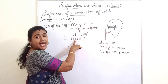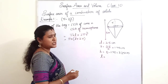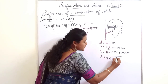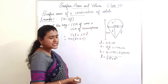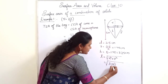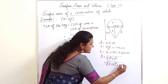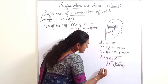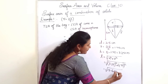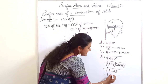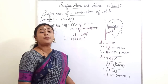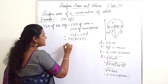Now we need the slant height of the cone. The formula is L = √(H² + R²). Substituting H = 3.25 and R = 1.75, we get √(3.25² + 1.75²) = √13.625 ≈ 3.7 cm. This is the approximate value of the slant height.